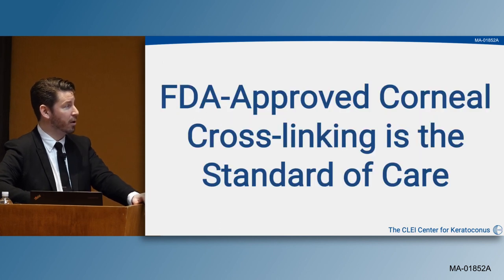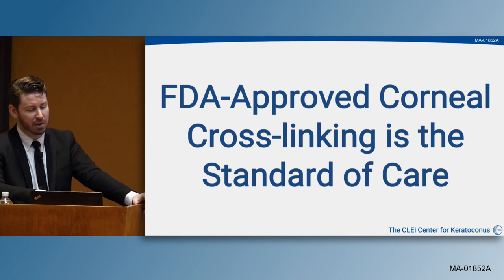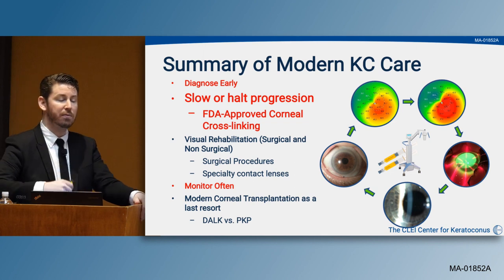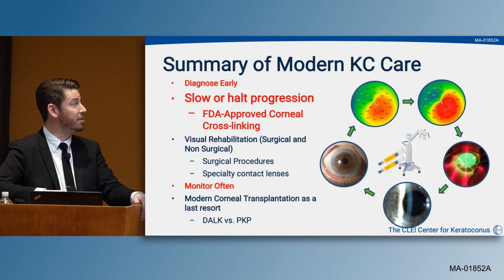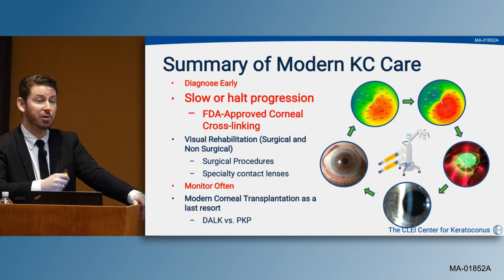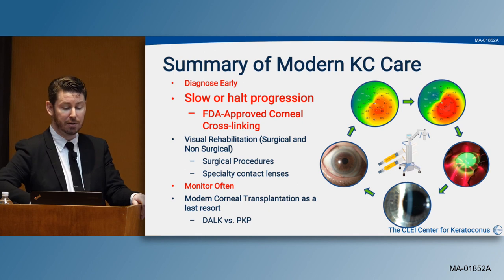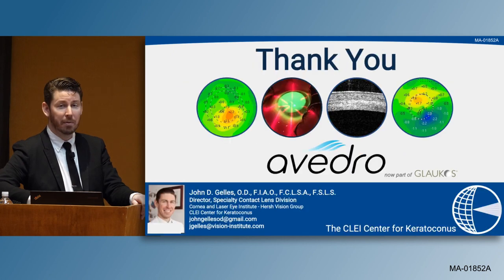FDA-approved corneal collagen cross-linking is the standard of care. In summary: diagnose individuals as early as possible, slow or halt progression with corneal collagen cross-linking, visually rehabilitate with specialty contact lenses or surgical procedures or a combination of the two, monitor these individuals often for change, and leave modern forms of corneal transplantation to the treatment of last resort.